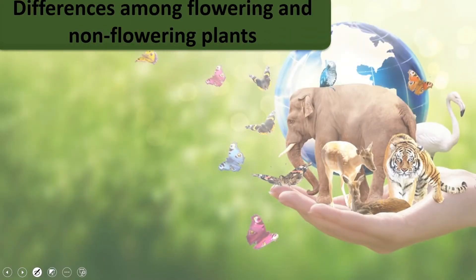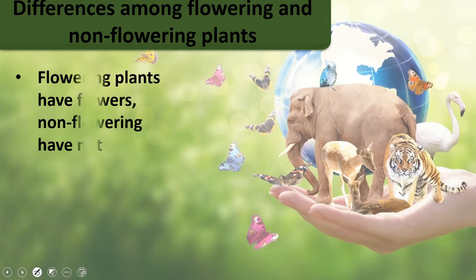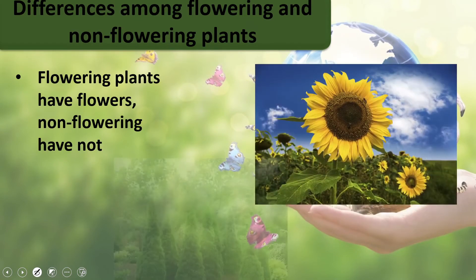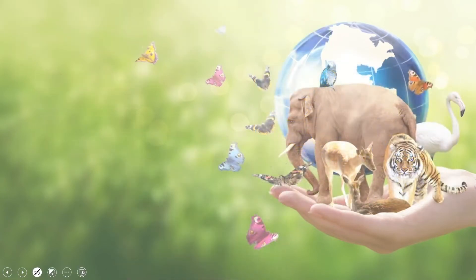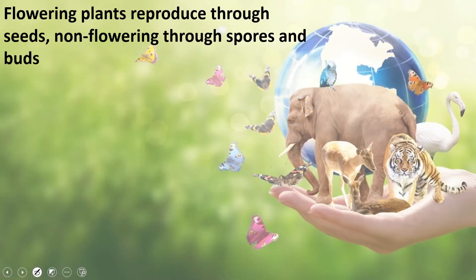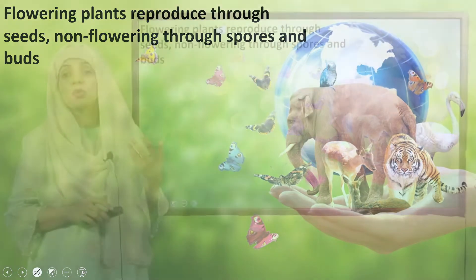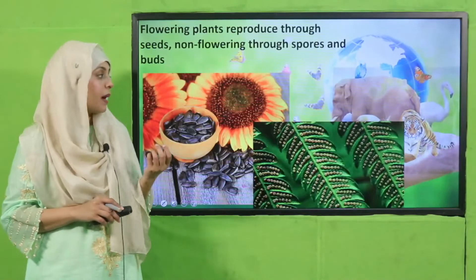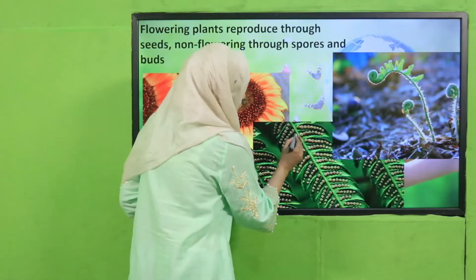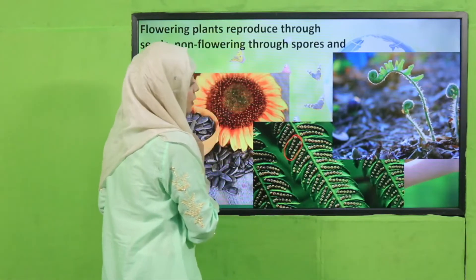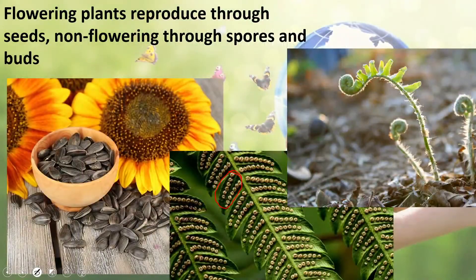So the differences among flowering and non-flowering plants are: flowering plants have flowers whereas non-flowering plants do not have flowers, as you can see in the pictures. Then, flowering plants reproduce through seeds whereas non-flowering plants reproduce through spores and buds. You can see the spores on the leaves of ferns.